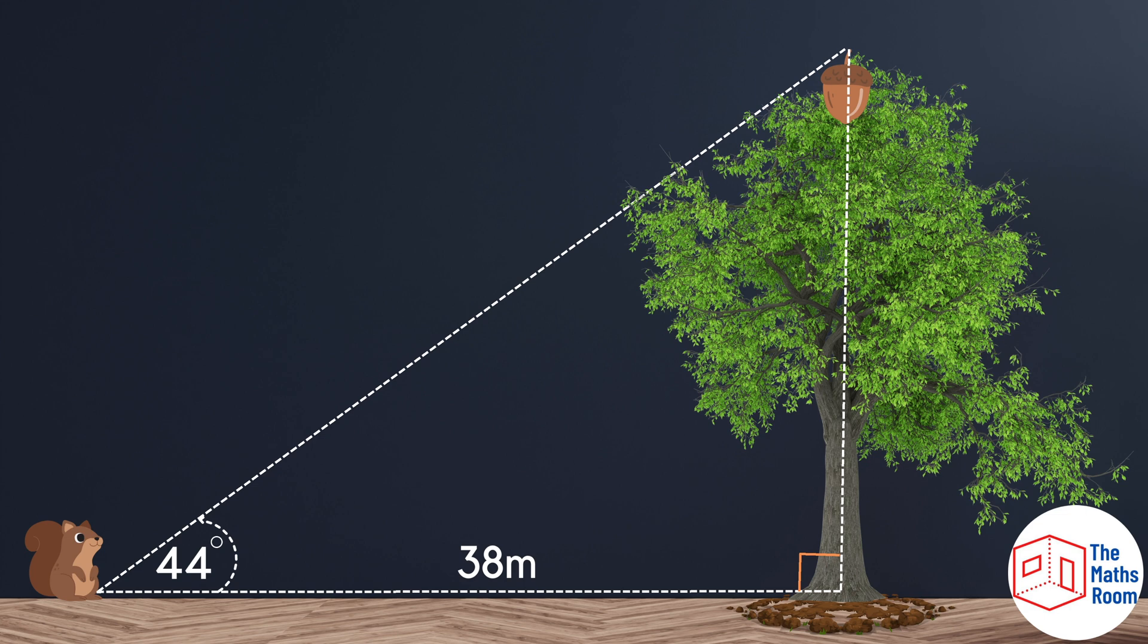Having a look at the problem we can see that we've been given the distance to the tree which is 38 meters and the angle from Scabbers to the very top of the tree which is 44 degrees. Very importantly we can also see that all these sides are forming a right angle triangle.